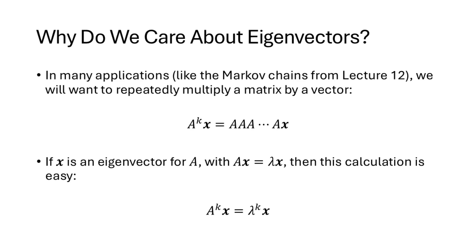So now that we understand the definition, why do we care about eigenvectors? One application is that it makes it easy to repeatedly multiply a square matrix times a vector. In Lecture 12 we talked about Markov chains, which involve repeatedly multiplying a matrix times a vector. If that vector happens to be an eigenvector, we can just raise our eigenvalue lambda to the k power and multiply that by our vector, saving a lot of computation.